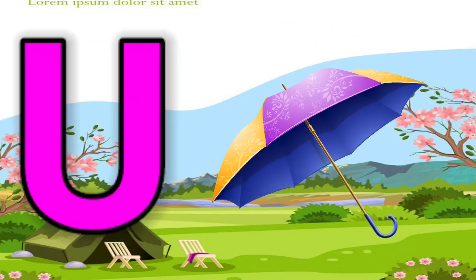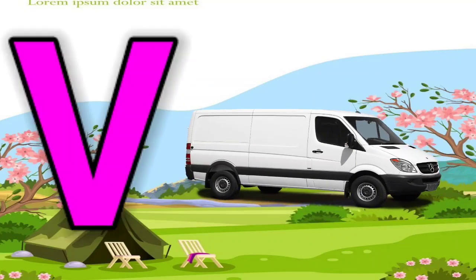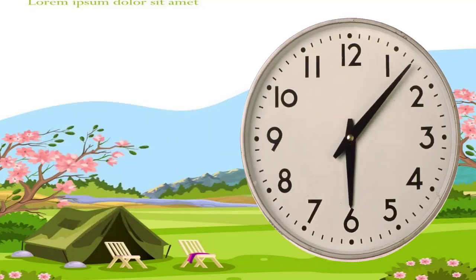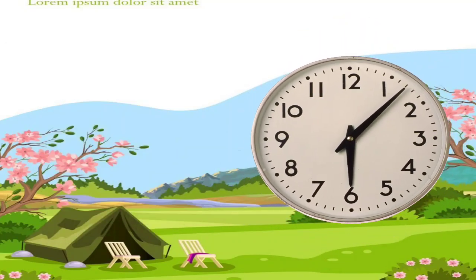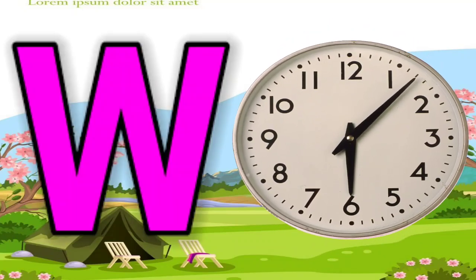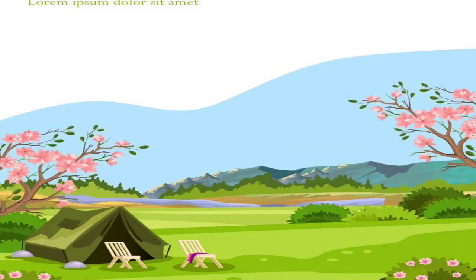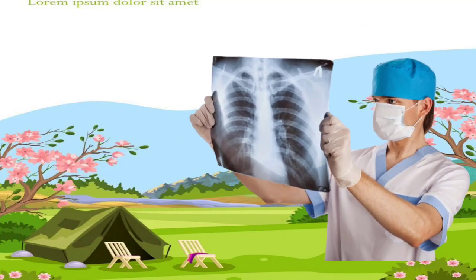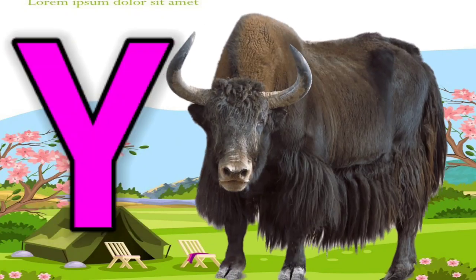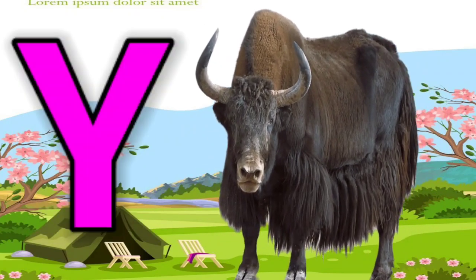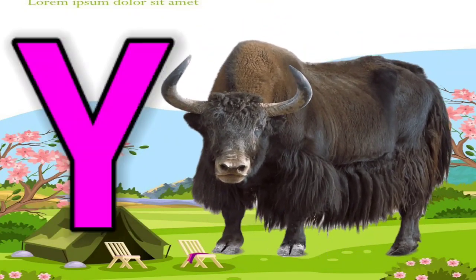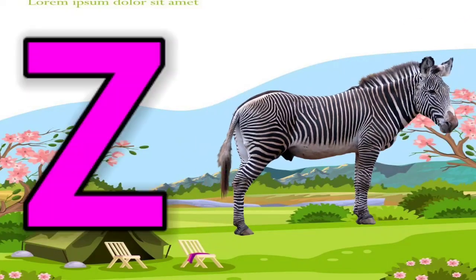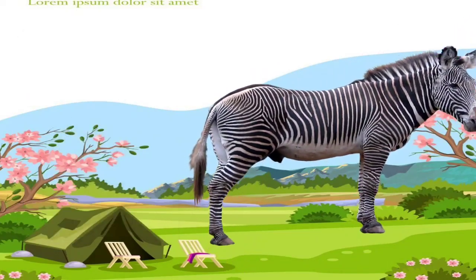U for umbrella. V for van. W for water. X for xylophone. Y for yak. Z for zebra.